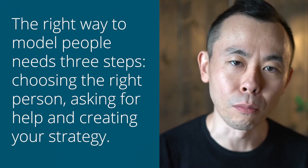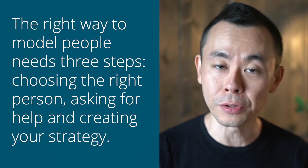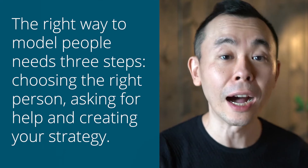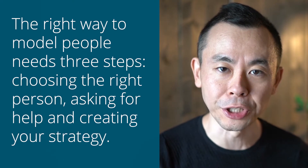The right way to model people needs three steps: you need to choose the right person, you need to ask for help, and you need to create your own strategy. The art of modeling people the right way is based upon three pillars. The first one is to choose the right model, the second one is to ask for help, and the last one is to create your own strategy, adapting everything to your life context.